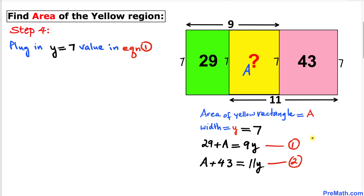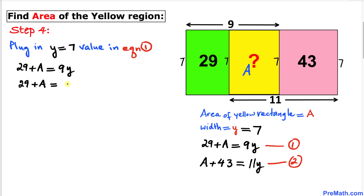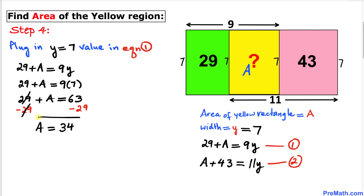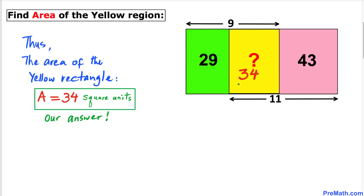Now let's plug y = 7 back into equation one. Replacing y with 7: 29 + A = 9 times 7, so 29 + A = 63. Subtracting 29 from both sides, the area of this yellow rectangle turns out to be 34 square units.